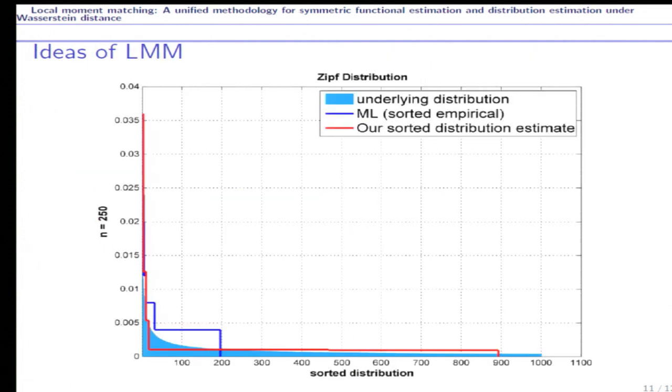I just described briefly the ideas behind the local moment matching idea. We consider the underlying distribution, which is a leaf distribution, and the blue curve is the sorted empirical distribution. So we just divide the y-axis into several local regimes depending on the sorted empirical distribution.